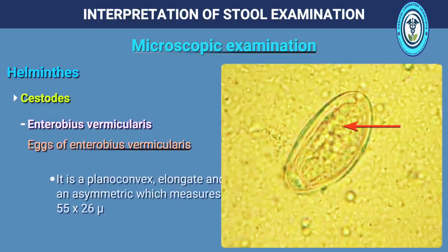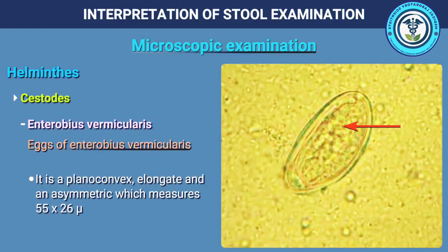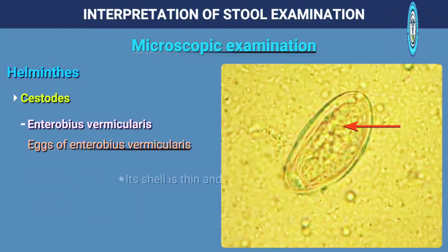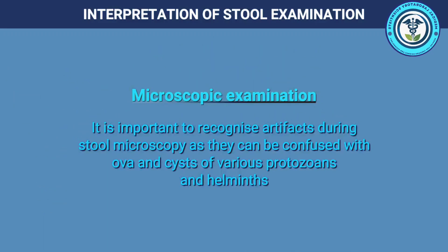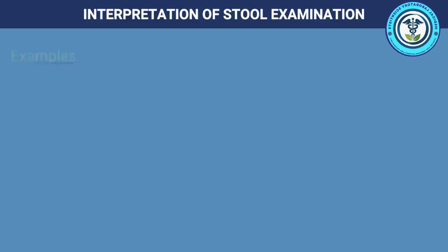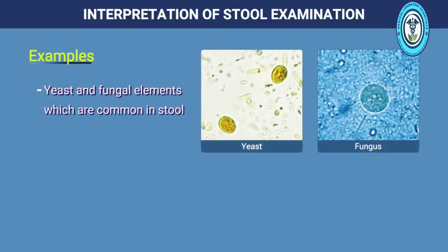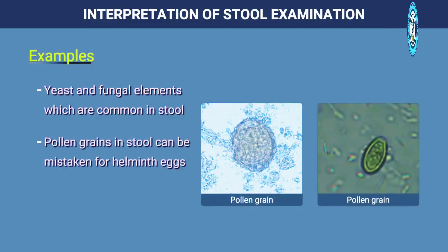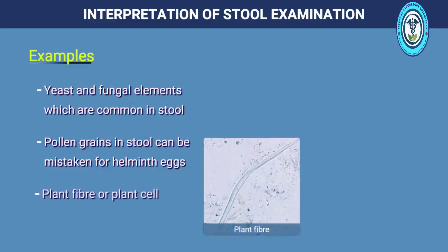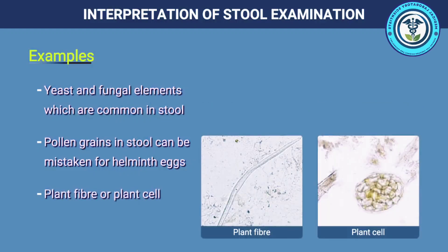Enterobius vermicularis: it is a plano-convex, elongate and asymmetric egg which measures 55 by 26 microns. Its shell is thin and smooth, and fully developed larvae are seen in the eggs. It is important to recognize artifacts during stool microscopy as they can be confused with ova and cysts of various protozoa and helminths — for example, yeast and fungal elements which are common in stool, pollen grains, plant fiber or plant cells, air bubbles, etc.